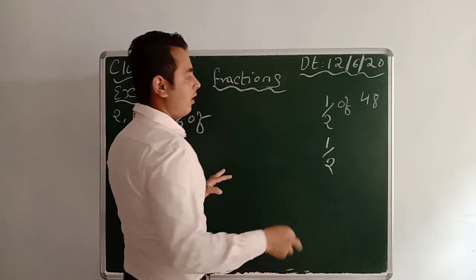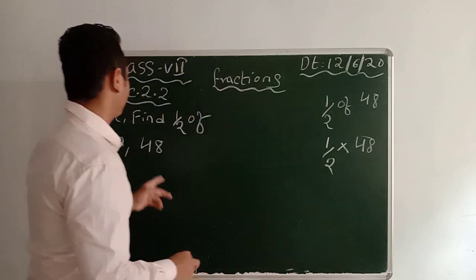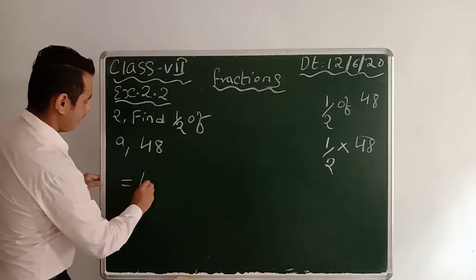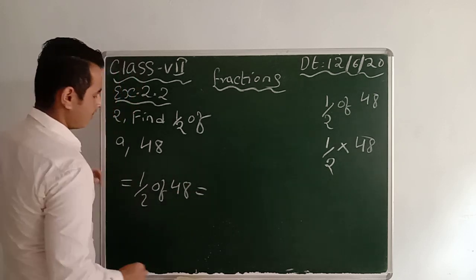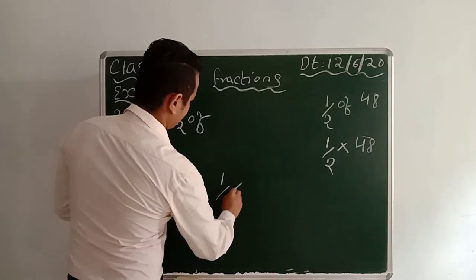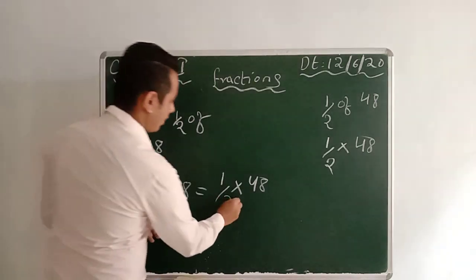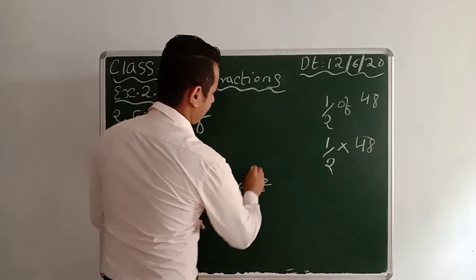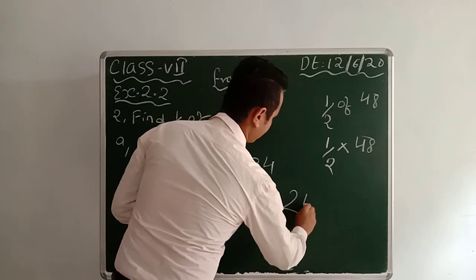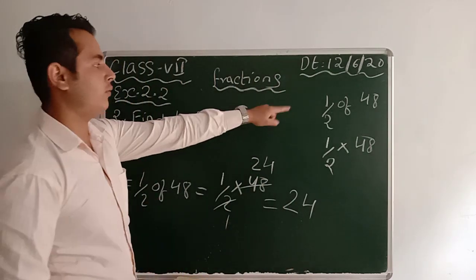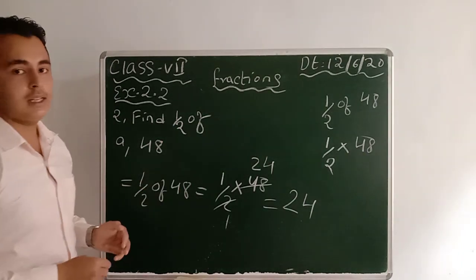As I already said, 'of' means multiply. So you can write it as 1/2 into 48. Now cut 2 and 48, giving you 24. So half of 48 equals 24. Half and multiplication are the same.